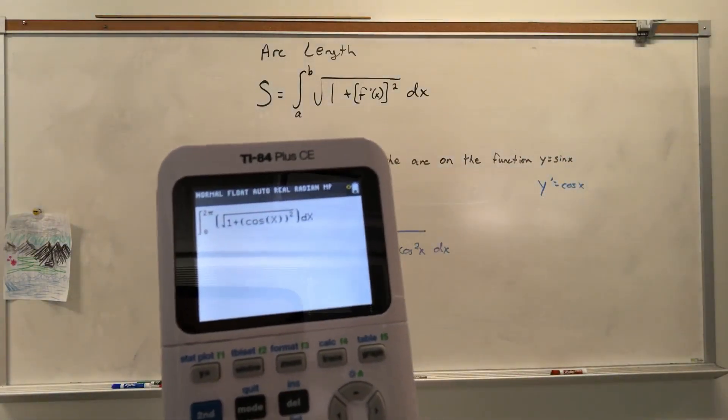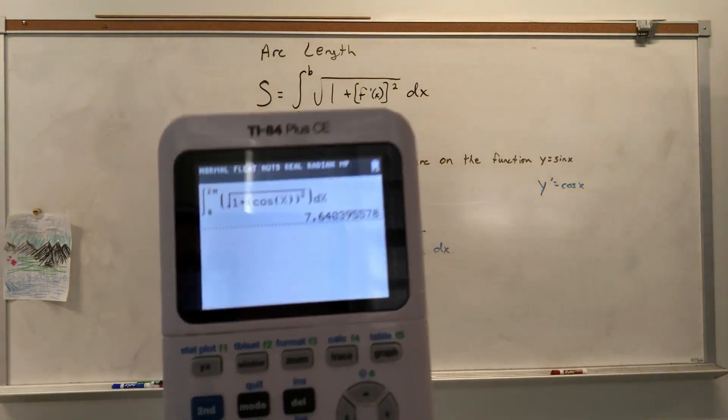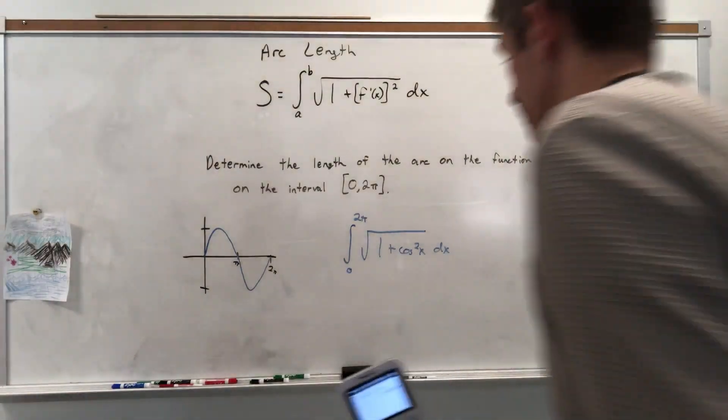And you'll see the answer. 7-something. Yeah, 7.640. We will round that to three decimal places.